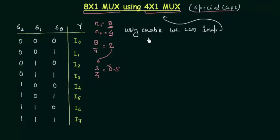Because in the last presentation when we implemented 8x1 by using 2x1 we assumed that the enable of all the 2x1 multiplexers is high, which means that the circuit or the multiplexer is always in the working mode.